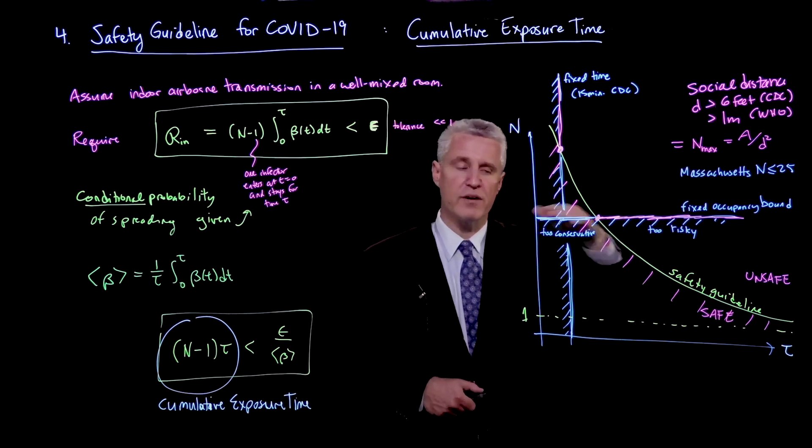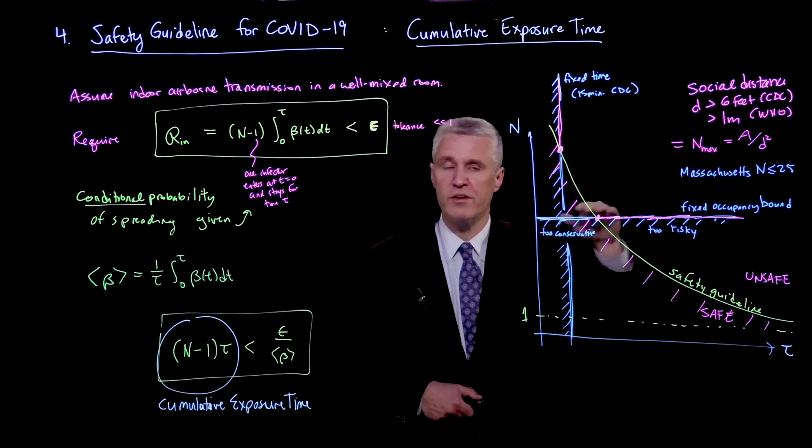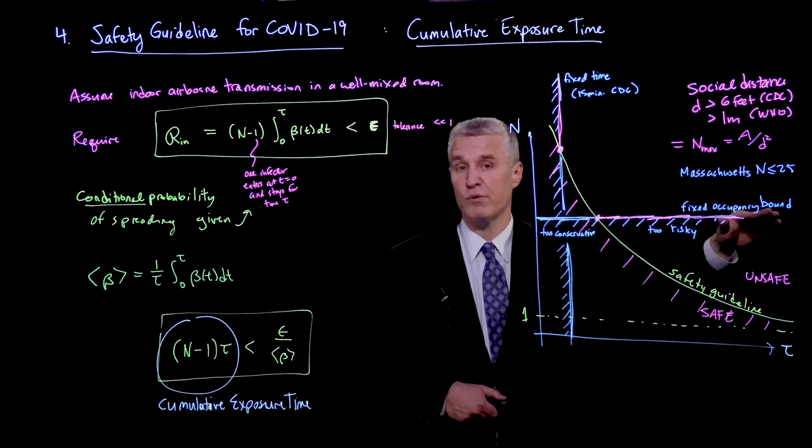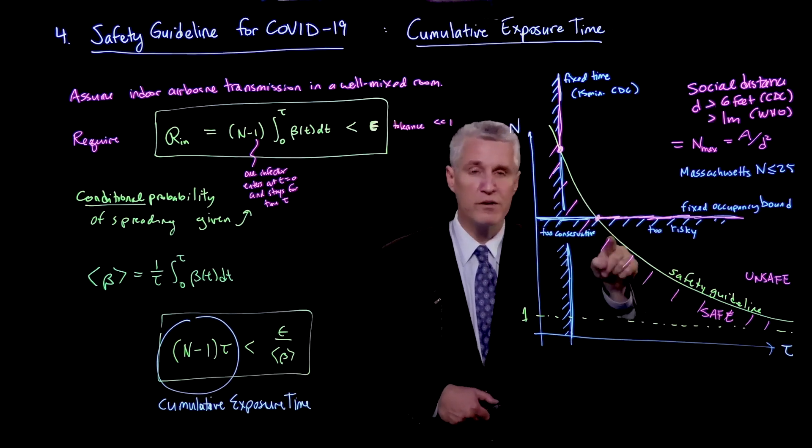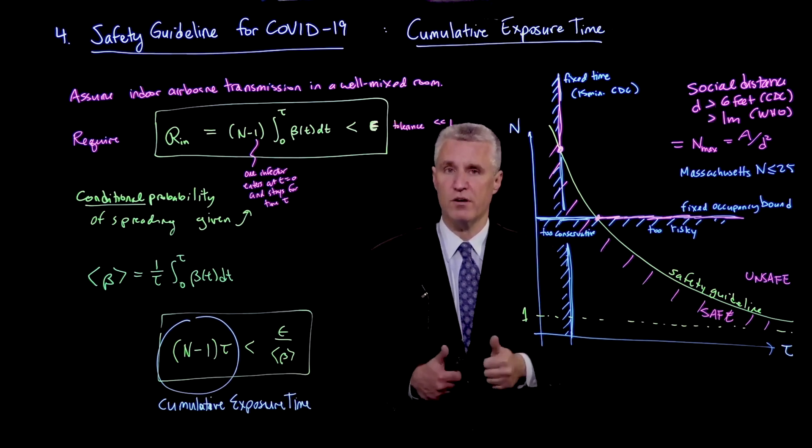So regardless of how it was derived, you still have a fixed occupancy, which is too conservative first and eventually is too risky. And you must know, where is that crossover point? Because occupancy and time are linked.